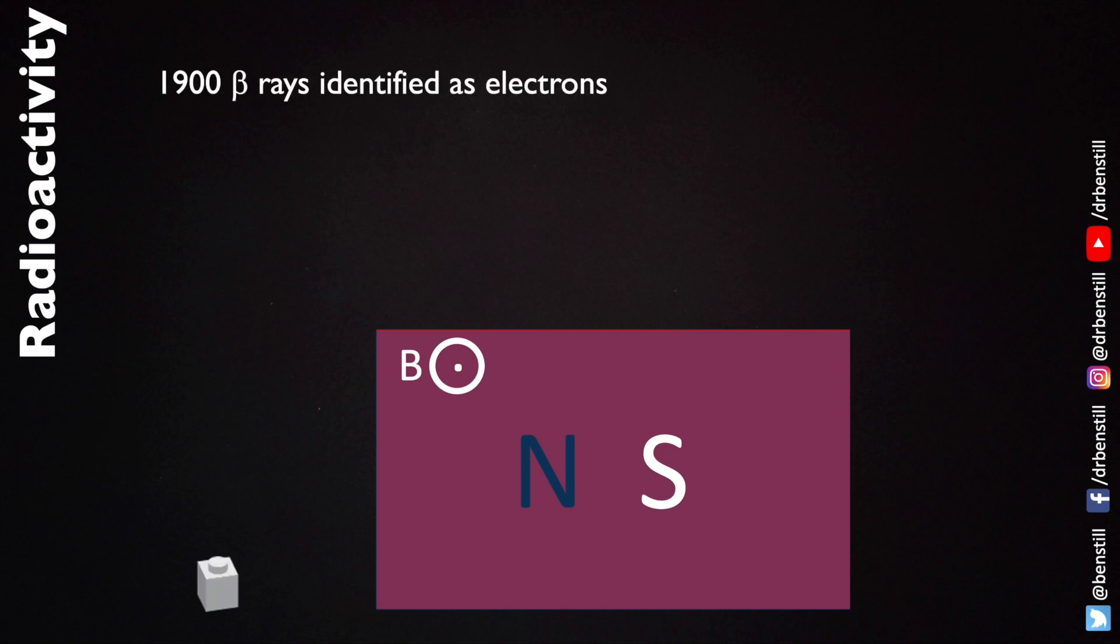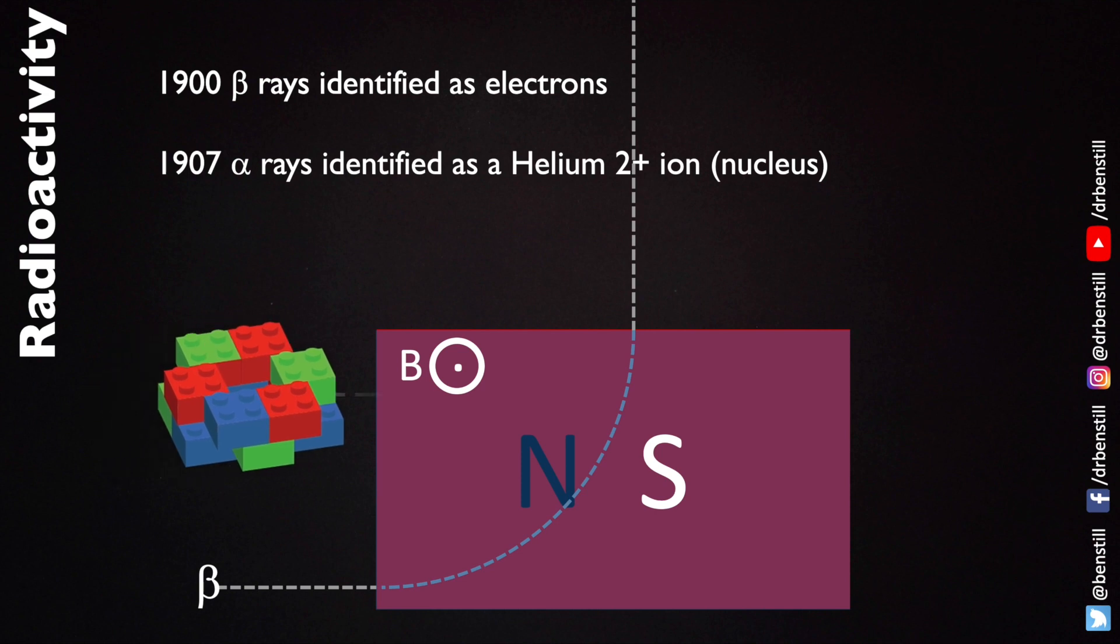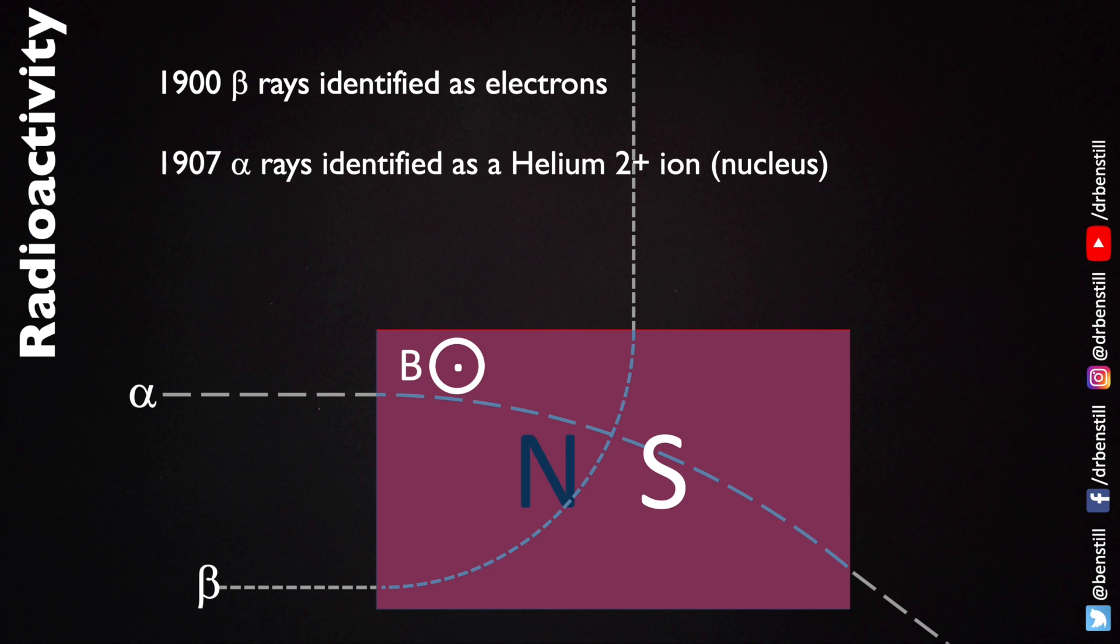Now the very nature of alpha beta and gamma were determined by passing the radiations through magnetic fields. If we had a north pole here and then we put on top of it a south pole such that the magnetic field was pointing out of the screen towards us and then we passed beta rays through it they were discovered to be electrons because they curved within the magnetic field suggesting they had an electric charge. Alpha particles were discovered to be helium two plus ions or what we would call nowadays a helium nucleus because it also curved in the opposite direction representing a positively charged particle and a much heavier object.